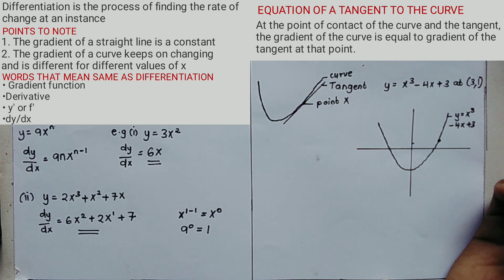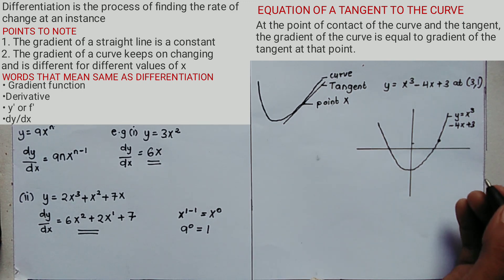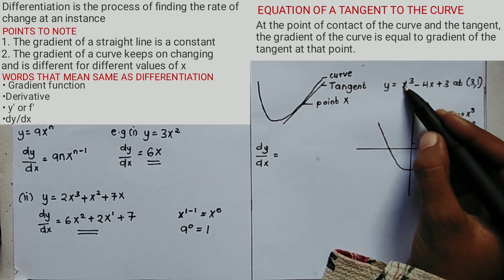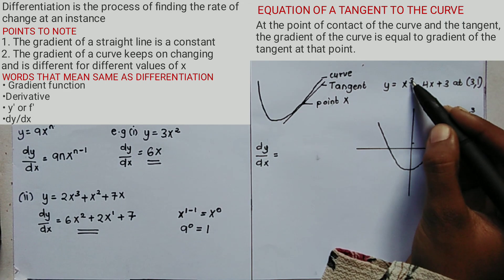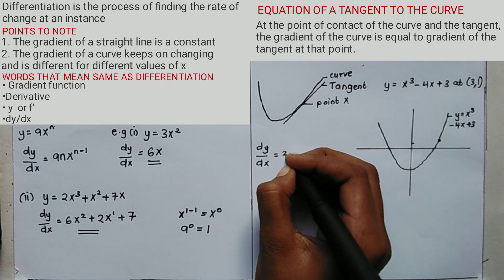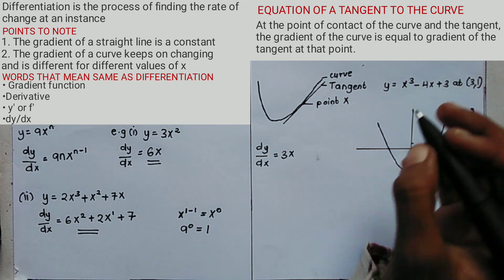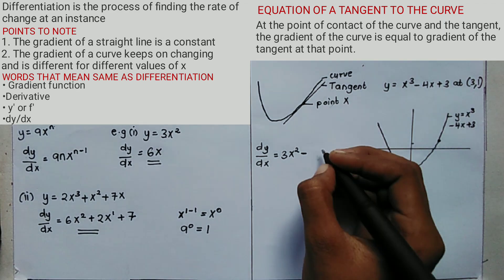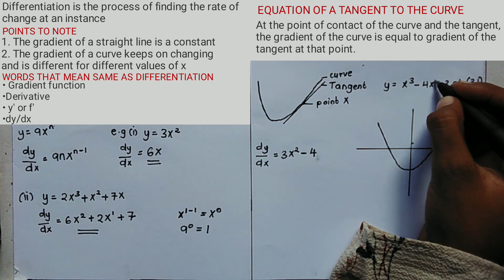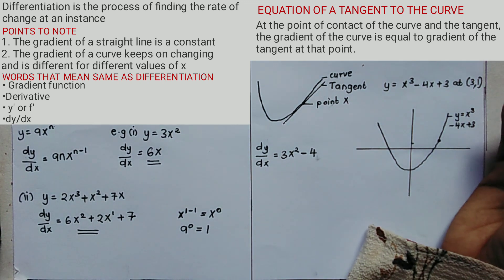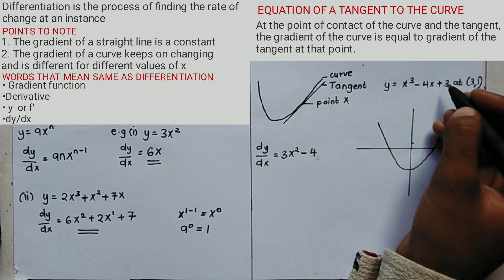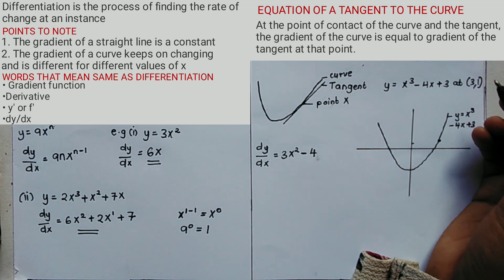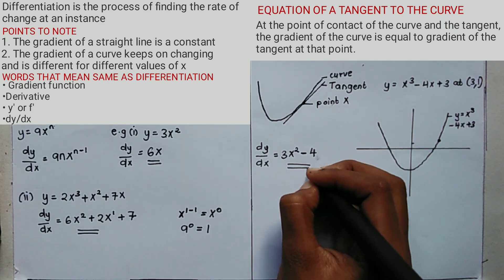Step 1: find the derivative of the equation of the curve. dy/dx equals: 1 times 3 gives 3x²; subtract 1 from power 3, giving 3x². Then minus 4, since the power of x is 1, giving 4 times 1 = 4. A constant term has no x, so its derivative is 0. Therefore dy/dx = 3x² - 4.